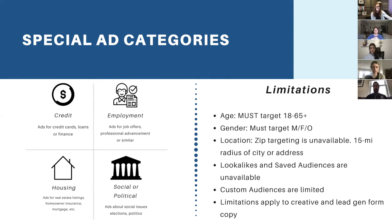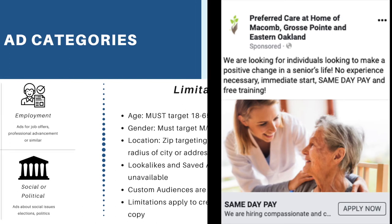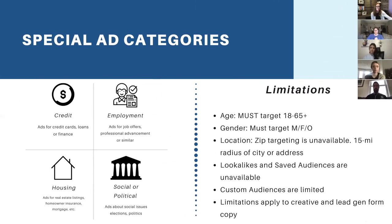The next one is employment — any kind of job offers, professional advancements, or similar. This also unfortunately applies to our franchise development campaigns. Those used to be very successful because we could target existing franchise owners with an ad offering to buy another franchise. Now Facebook doesn't allow that, and we have to target users from 18 to 65 and cannot target that specific job title.